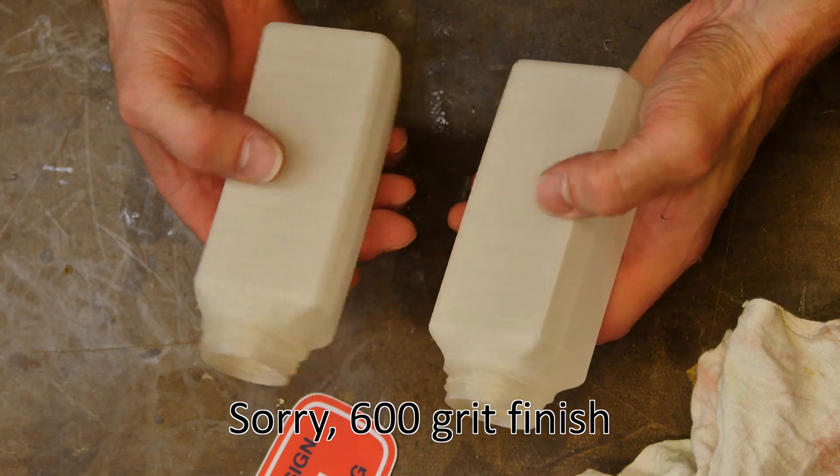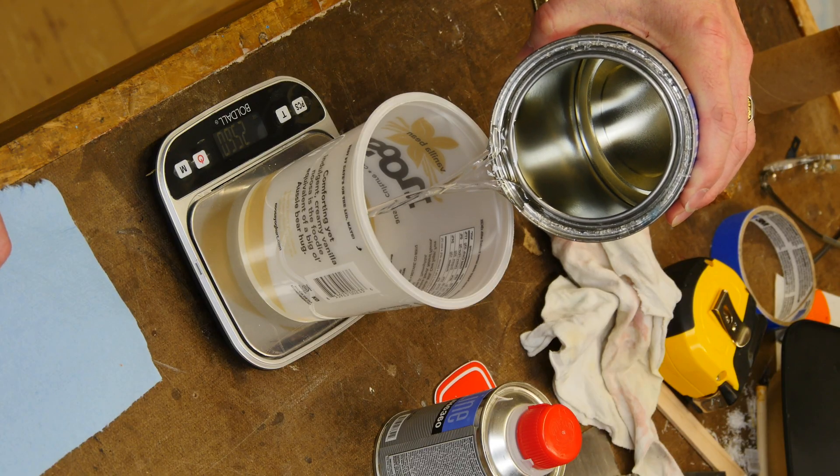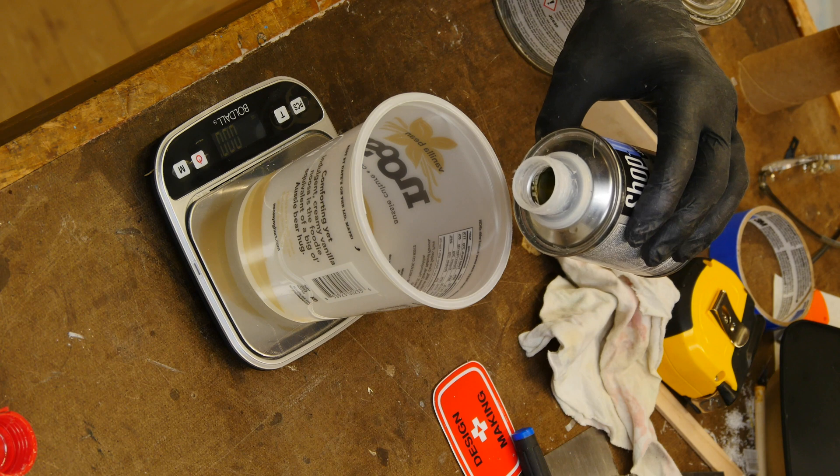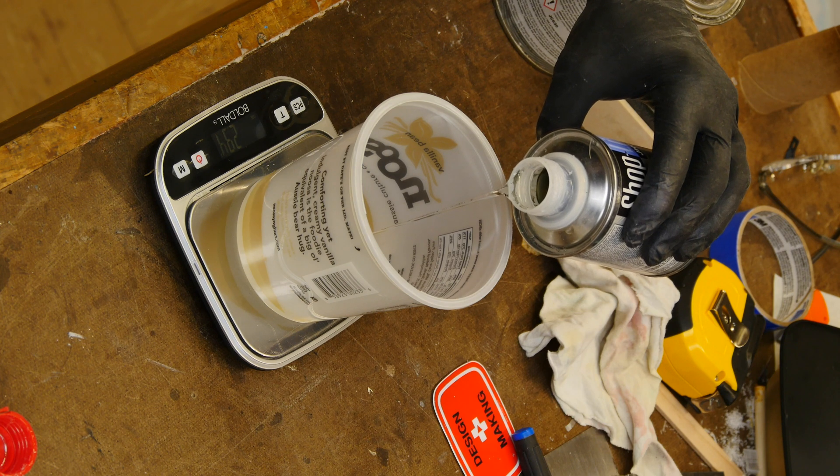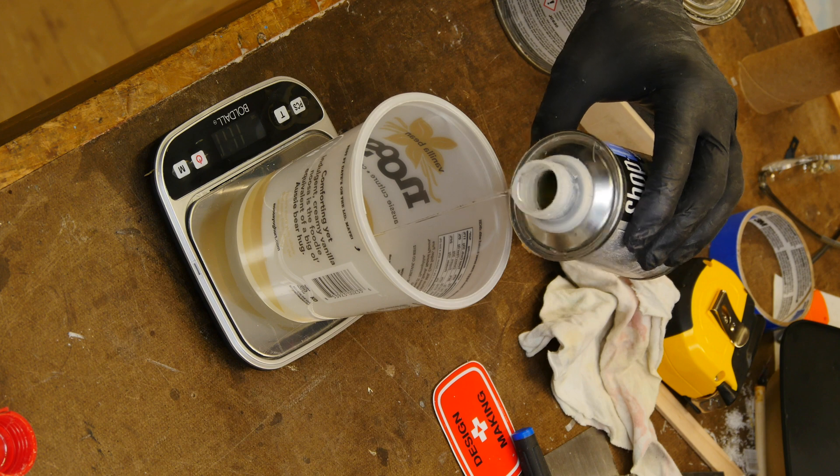Next, we're going to go to a 400 grit to finish up the sanding and we're going to end up with a 600, which is a little bit more than I did before.